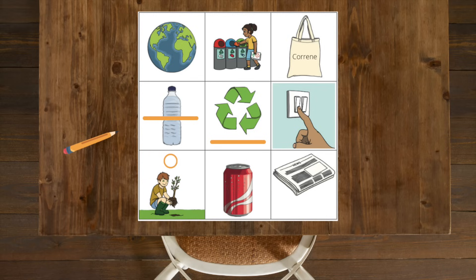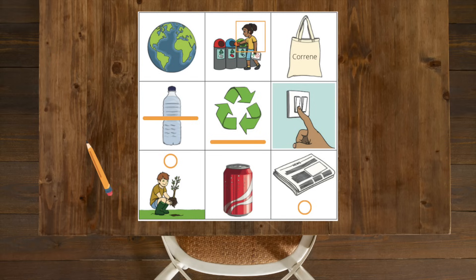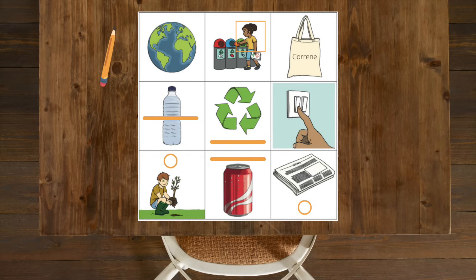Write your name on the canvas bag. Draw a circle under the newspaper. Draw a square around the girl recycling. Draw a line above the soda can.